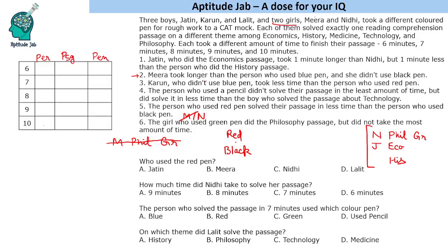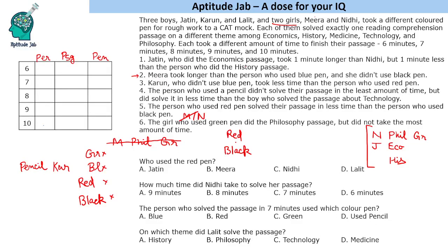Now let us find Karun's pen color. Karun didn't use blue pen. He took less time than the red pen person, and red comes before black, so Karun comes before both red and black. That means Karun cannot use red pen or black pen. He also cannot use green pen since Nidhi uses that. So Karun is left with the pencil.